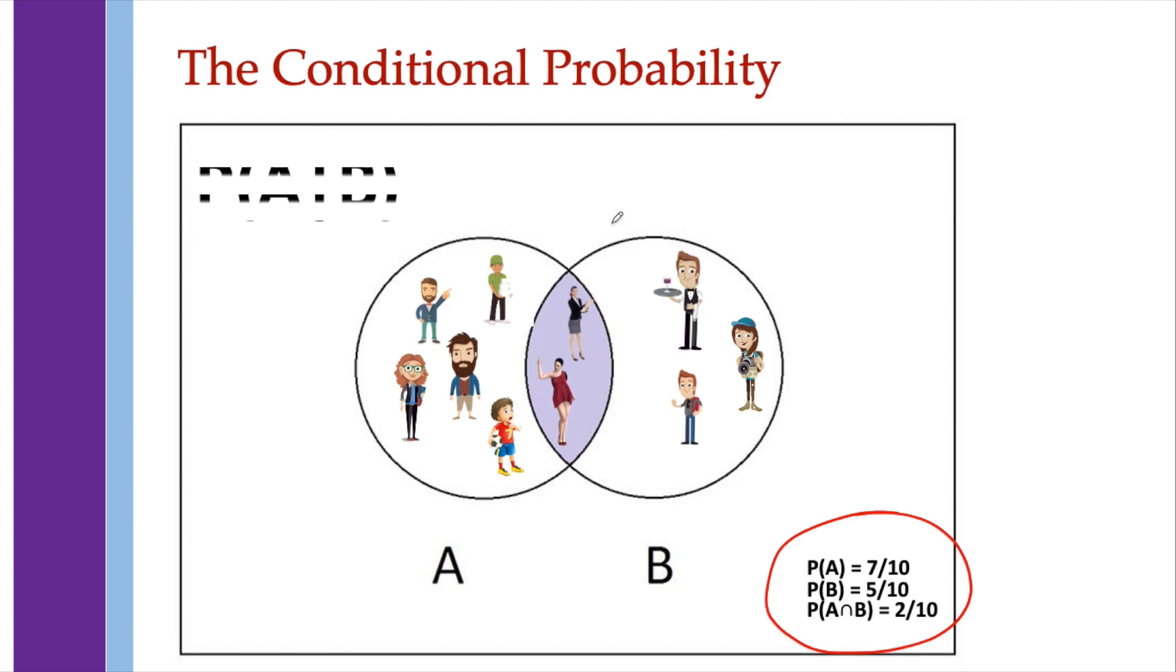The conditional probability which is written as P(A|B) is read as the probability of A given B.